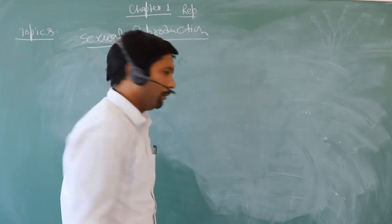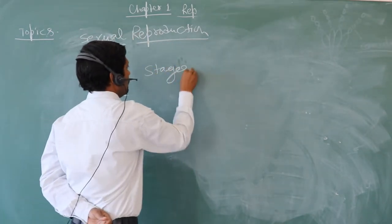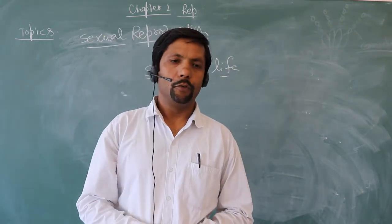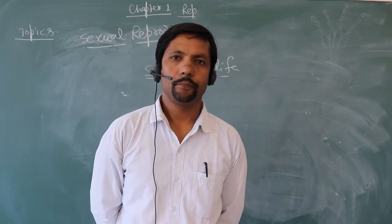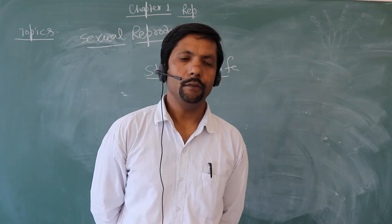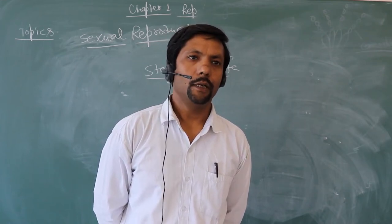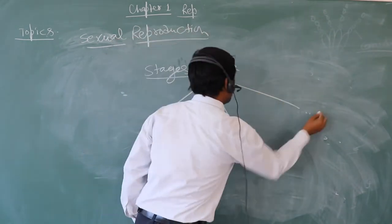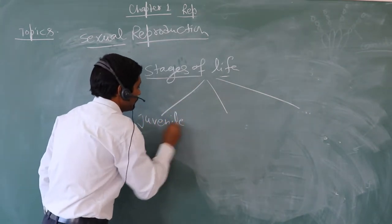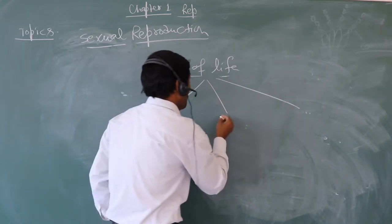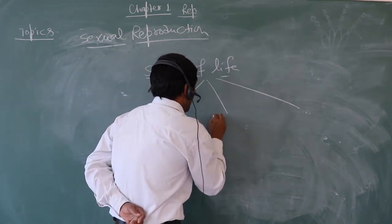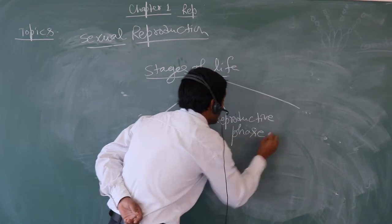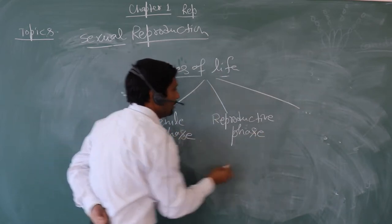Now let us come to the stages of life. Each and every living individual has three stages in their life. The first is called the juvenile stage, the second is called the reproductive stage, and the third is called the senescent phase. So stages of life can be divided into three parts: the juvenile phase, the reproductive phase, and the senescent phase.